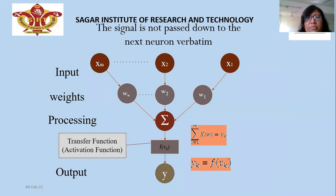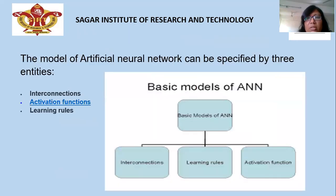In the neural network model there is input, weight, and a processing unit. In the processing unit there is an activation function and summation, then output. The main purpose of this video is the design of the neural network — the architecture of the neural network.